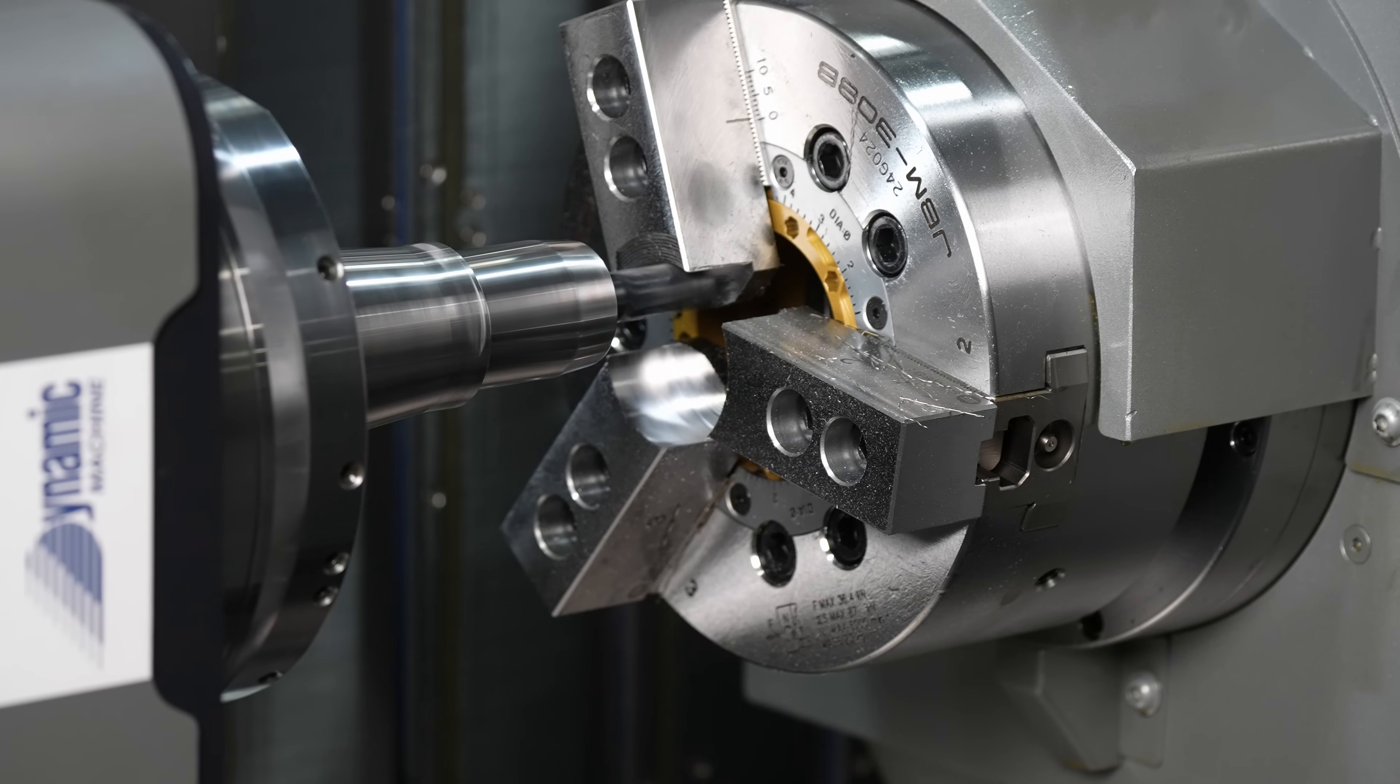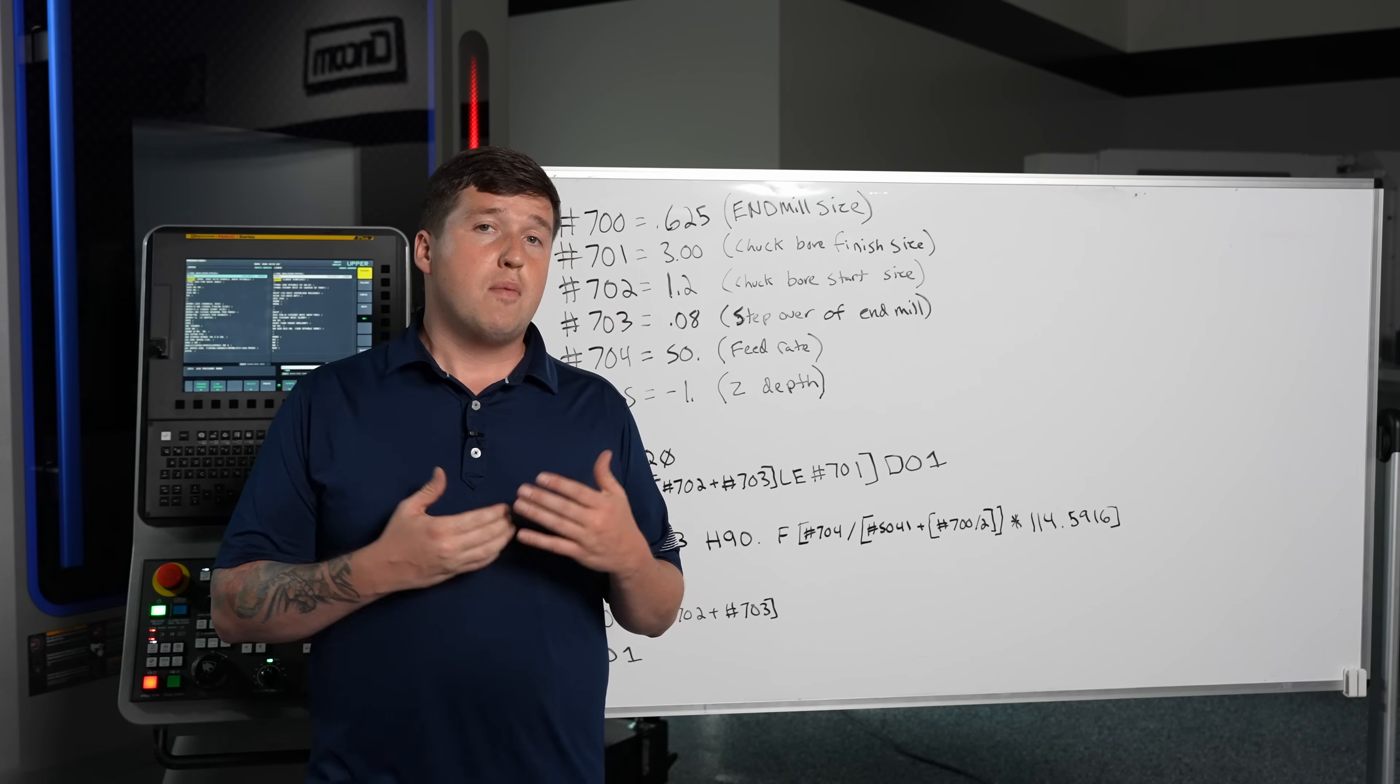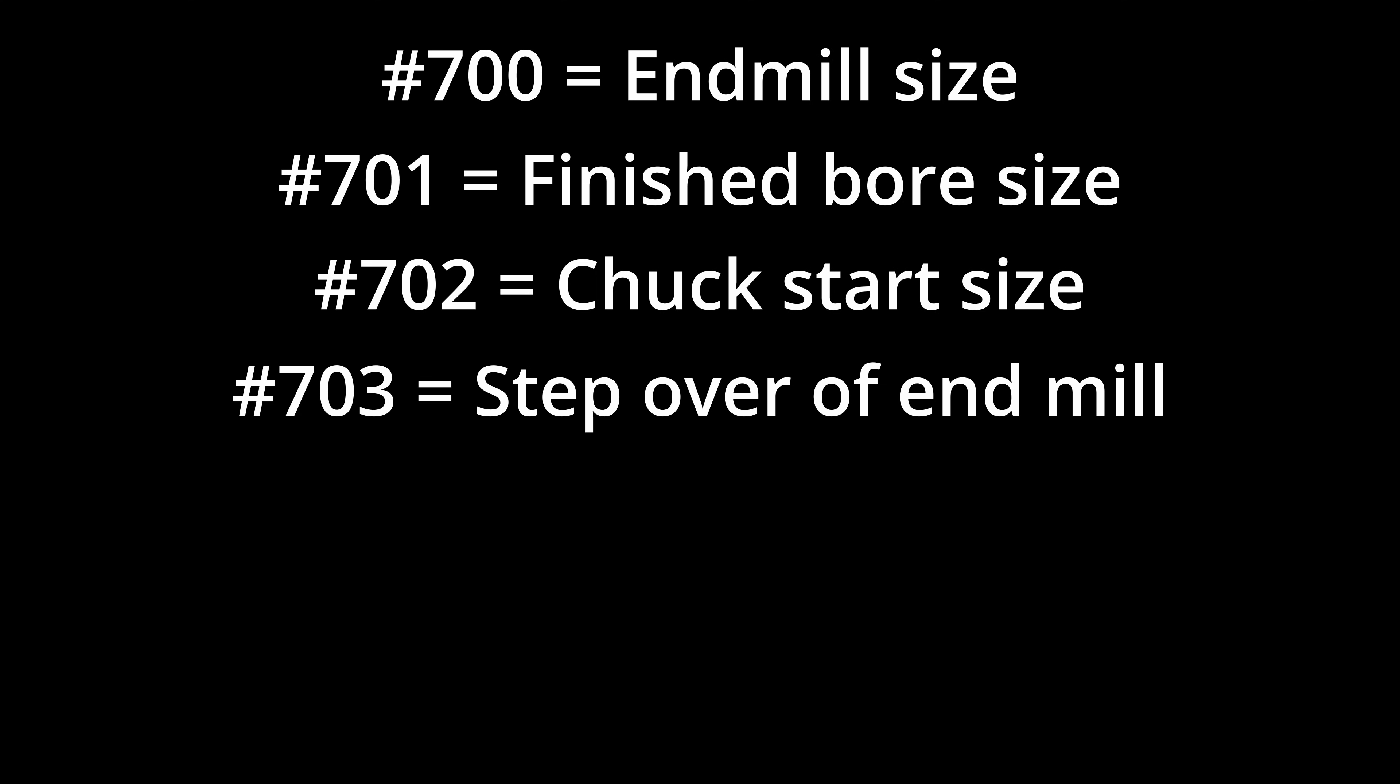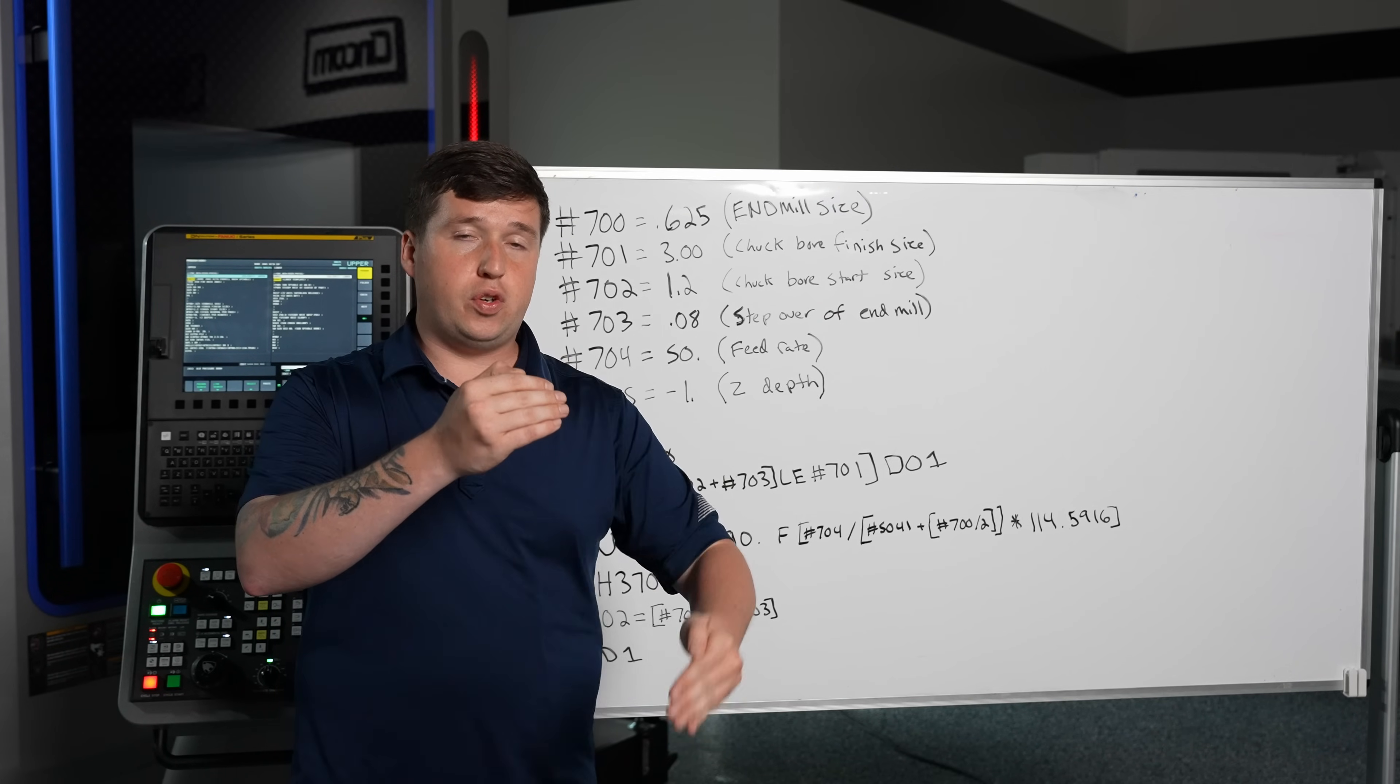But how is it going to work its way up? Well that's where the next variable comes into play here and that's pound 703. Pound 703 is going to be how much the end mill moves up in x every revolution. So it's going to move up do a revolution move up do a revolution.